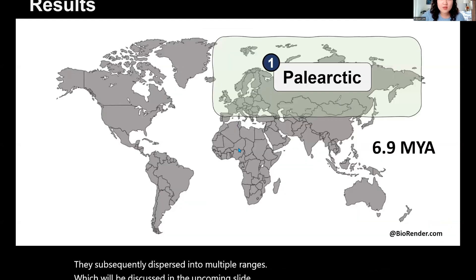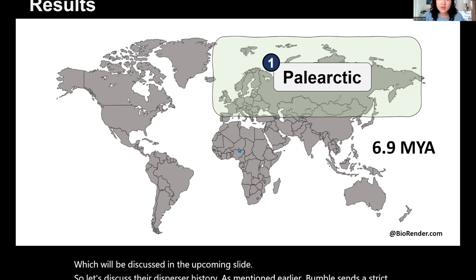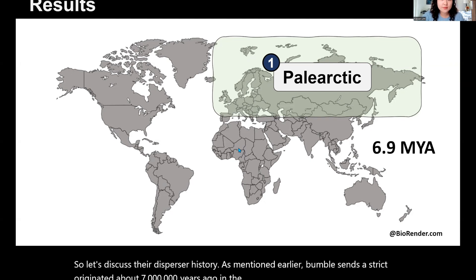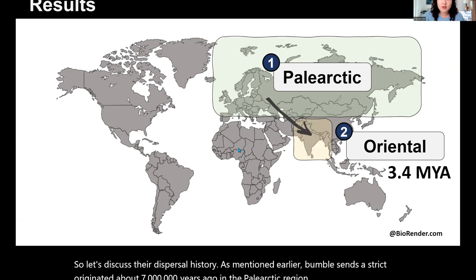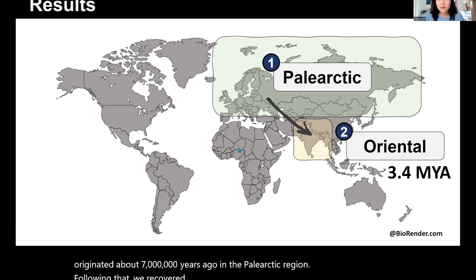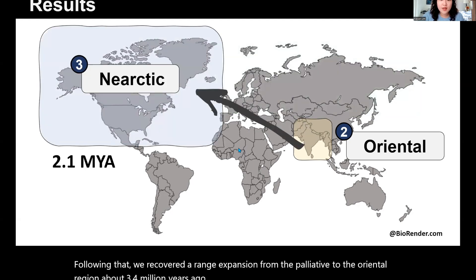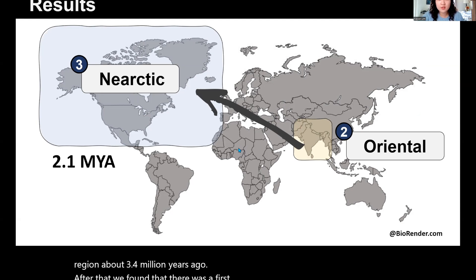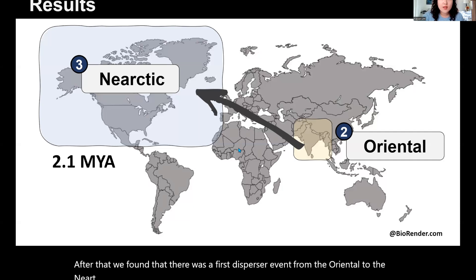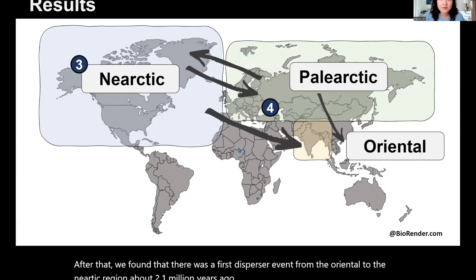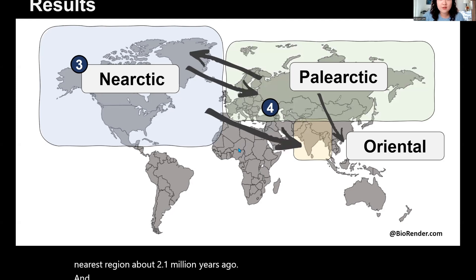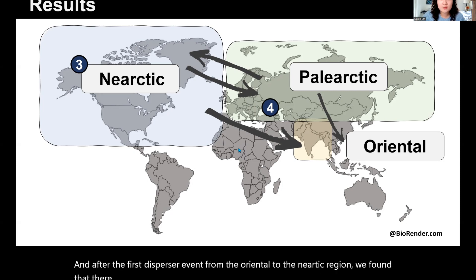Let's discuss their dispersal history. As mentioned earlier, Bombus sensus stricto originated about 7 million years ago in the Palearctic region. Following that, we recovered a range expansion from the Palearctic to the Oriental region about 3.4 million years ago. After that, we found a first dispersal event from the Oriental to the Nearctic region about 2.1 million years ago. After this first dispersal event, there was active range expansion between the continents.